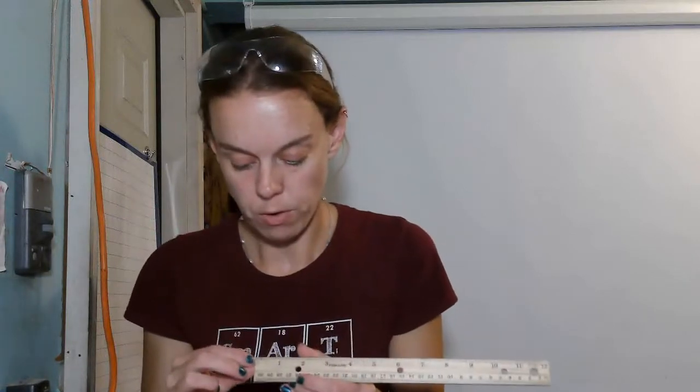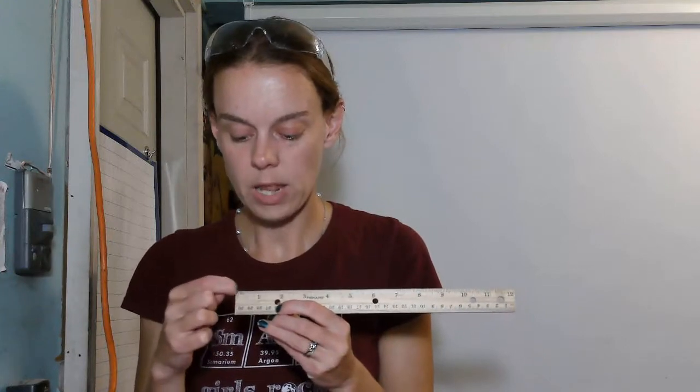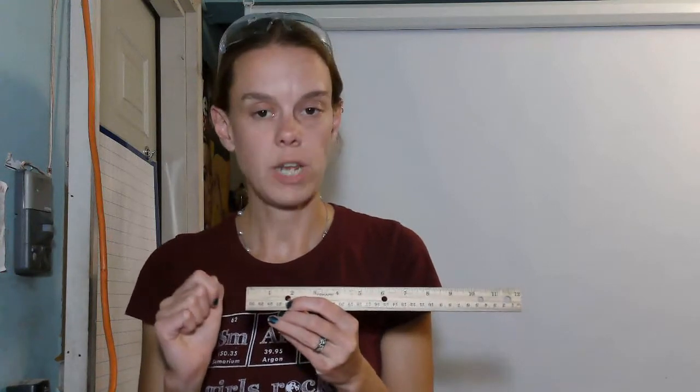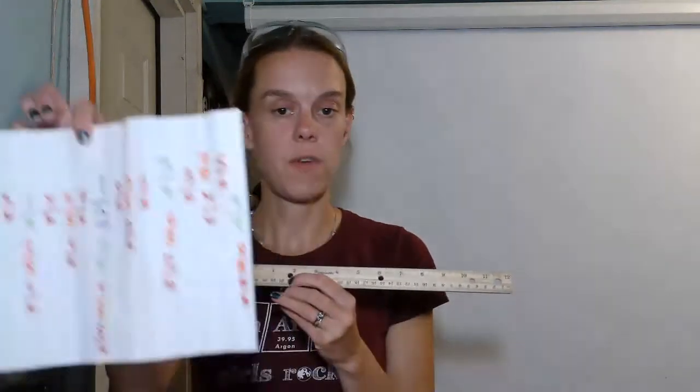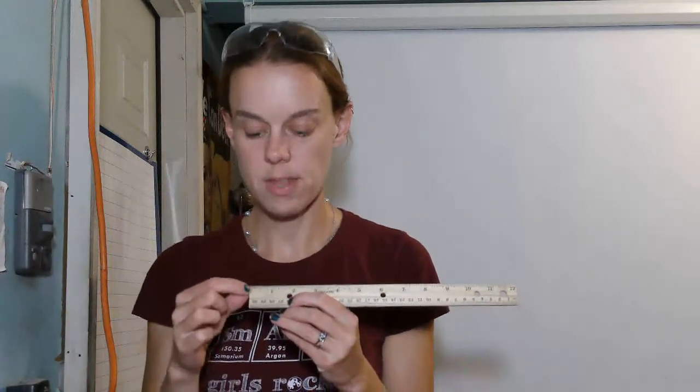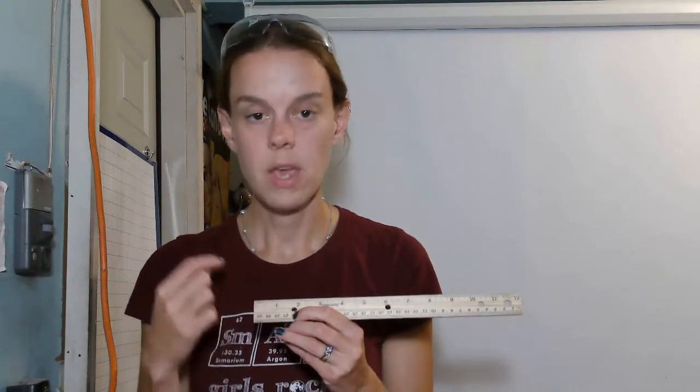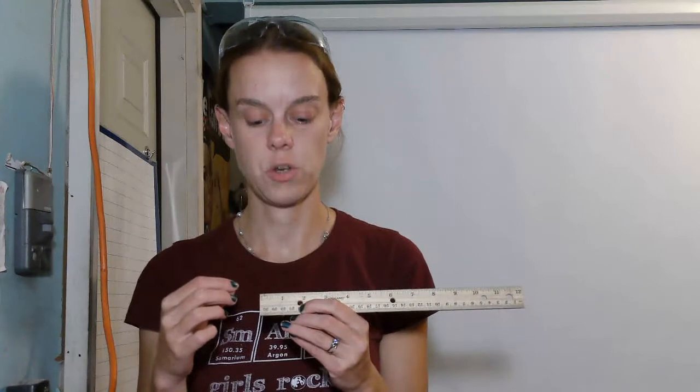If you look at a ruler between 0 and 1, how many lines are there? Those are called increments. That's what we just figured out here. This shows you each of those increments. This ruler has 16 lines between 0 and 1. This ruler can measure to the nearest sixteenth of an inch.